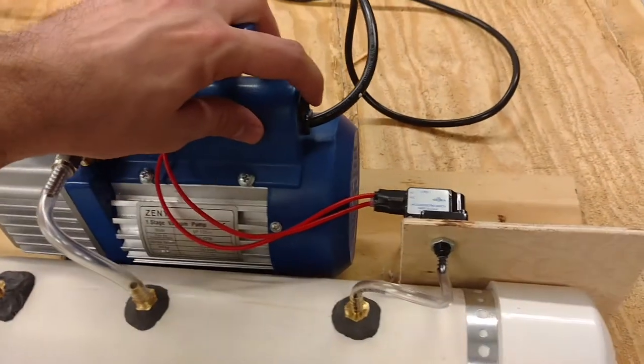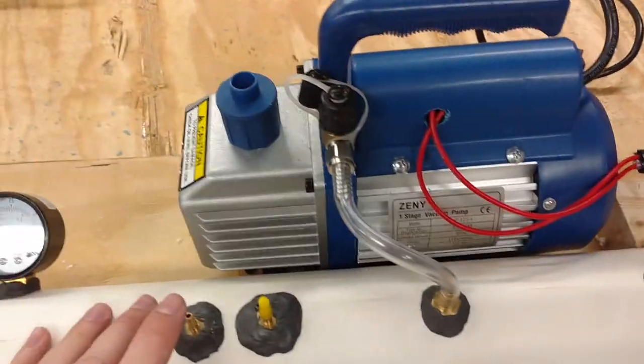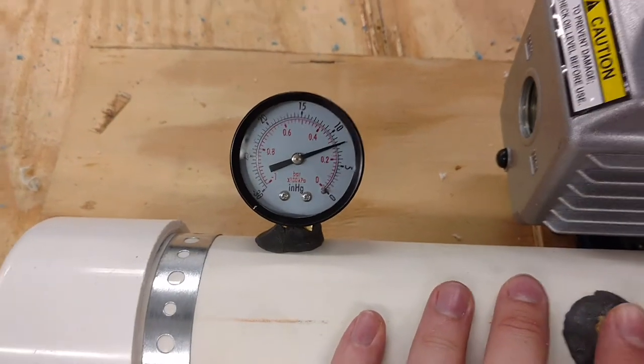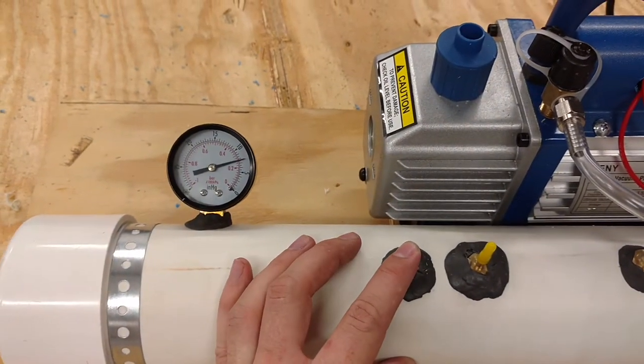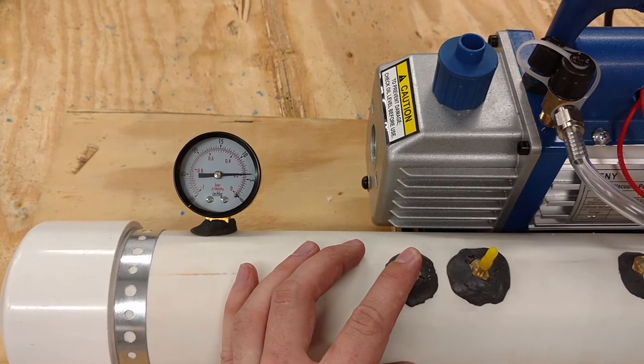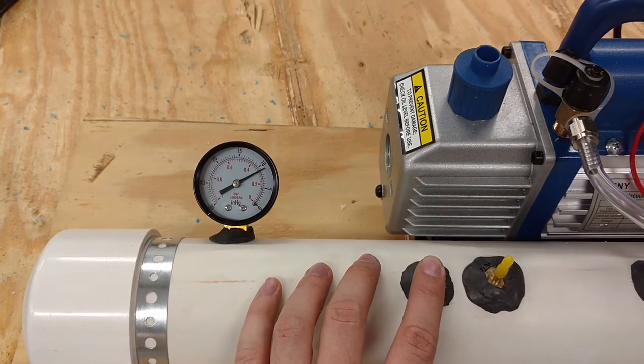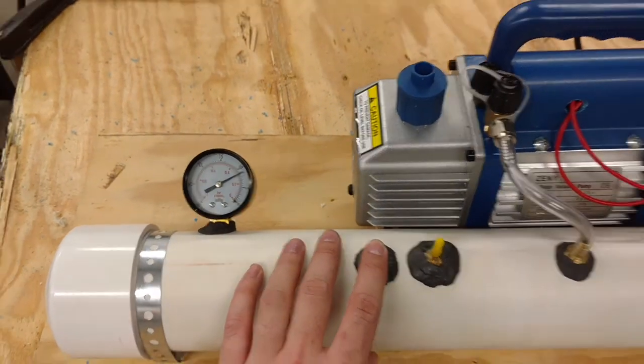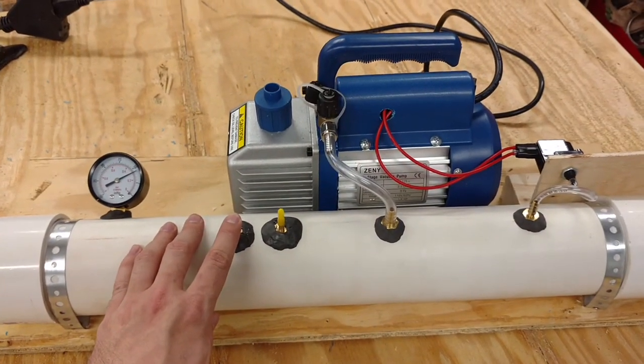I'll go ahead and turn it on. You can see it shuts off around 8 inches and if I let it leak down it comes on and it only takes about a second to pump it back down to 8 inches. So hopefully bagging something overnight it just runs very, very short duty cycles.